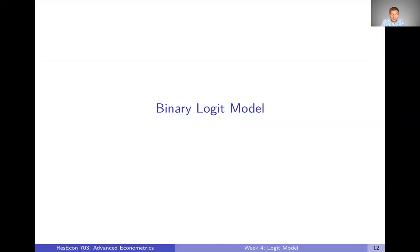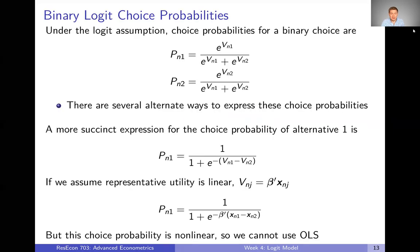So now we're going to talk about the binary logit model. Like I said at the end of the last video, that is an example of a logit model where there are only two alternatives. We actually talked about this last week also as an example of applying the random utility model.